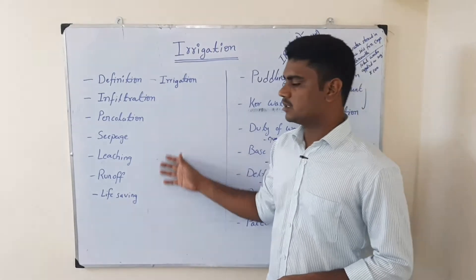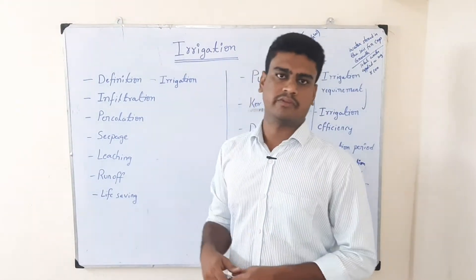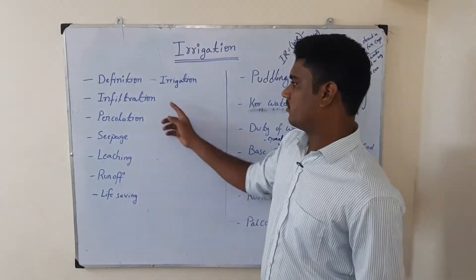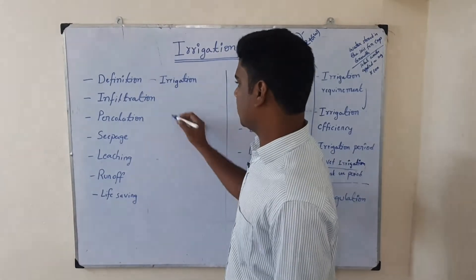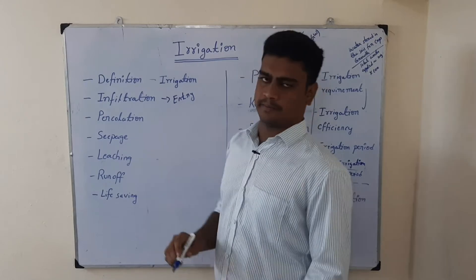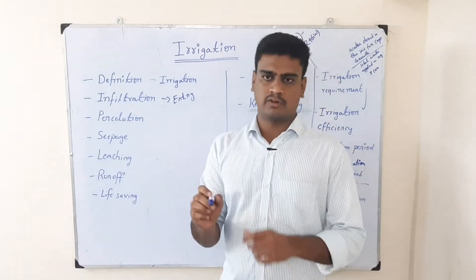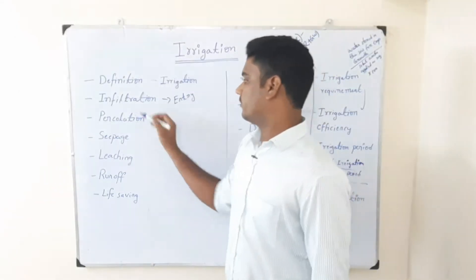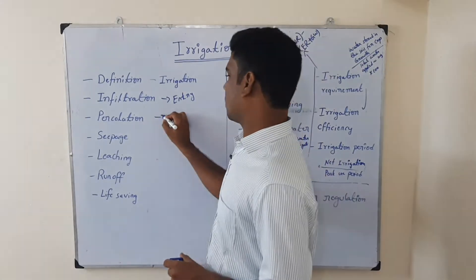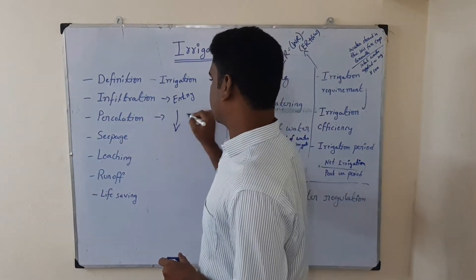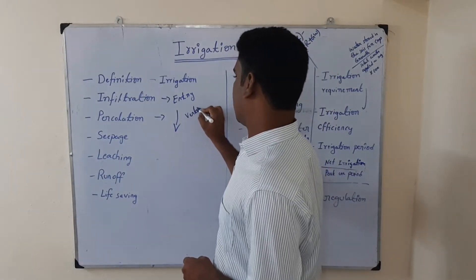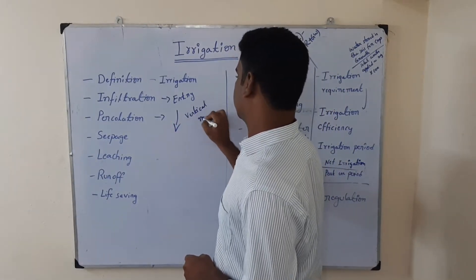So in irrigation, after we apply water to the field, what happens in the soil and what are the terms we use — let us see. Once we apply irrigation to the field, the first step that takes place is infiltration. Infiltration is nothing but the entry of water into the soil. Once water enters into the field, it enters the soil — that is called infiltration.